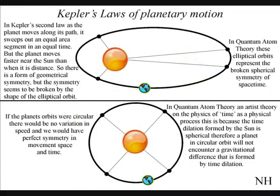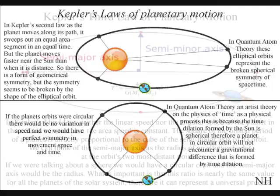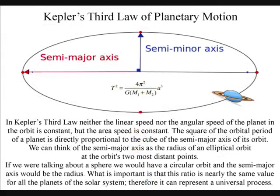In a new theory, this is because of time dilation formed by the sun. If the planets' orbits were circular, there would be no variation in speed and we would have perfect symmetry in movement, space, and time as can be seen in the lower part of this diagram. This is because the time dilation formed by the sun is spherical, therefore a planet in circular orbit will not encounter a gravitational difference that is formed by time dilation.